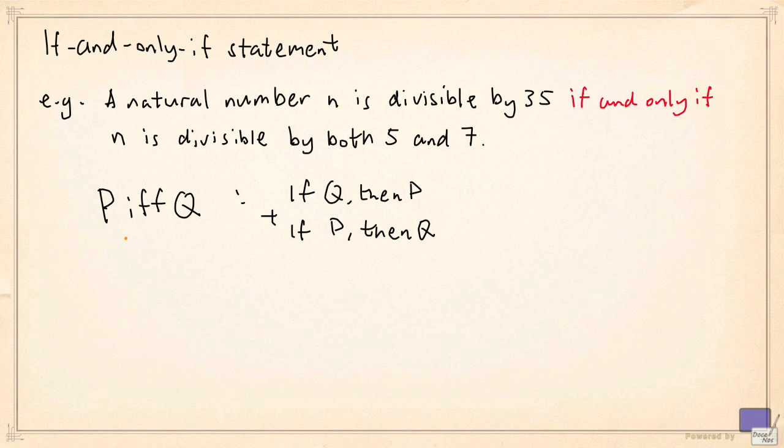In a statement p if and only if q, p is called a necessary condition for q. Proving necessity means proving if p then q. And q is called a sufficient condition for p. Proving sufficiency means proving if q then p.